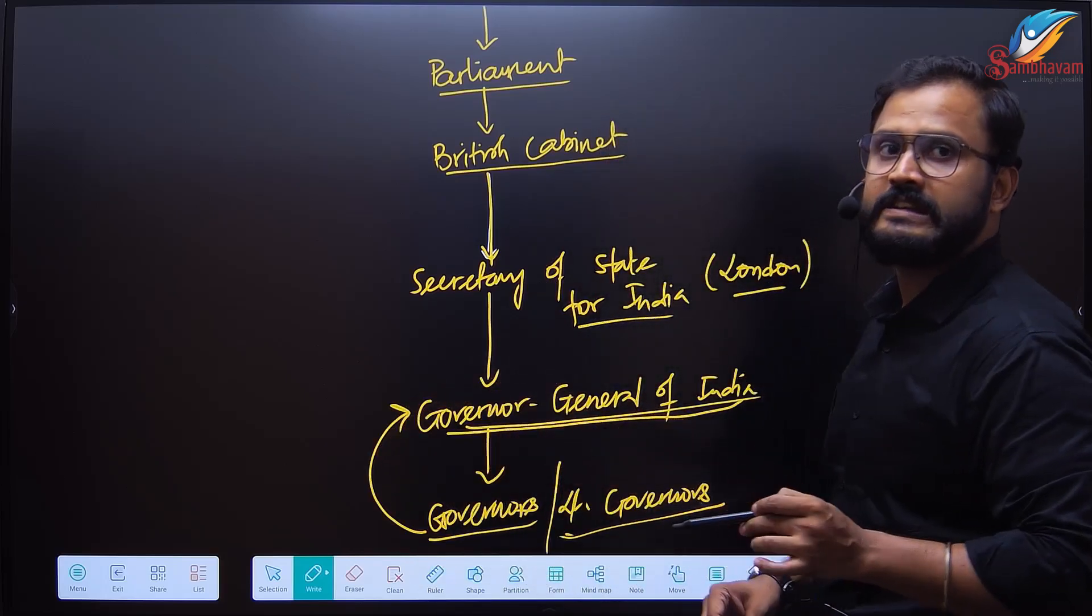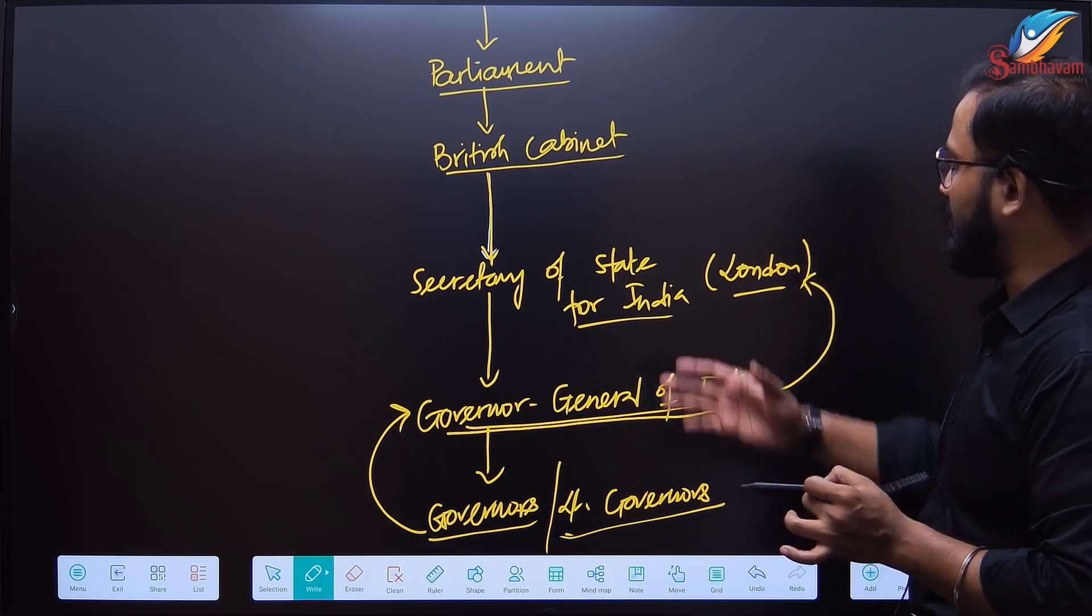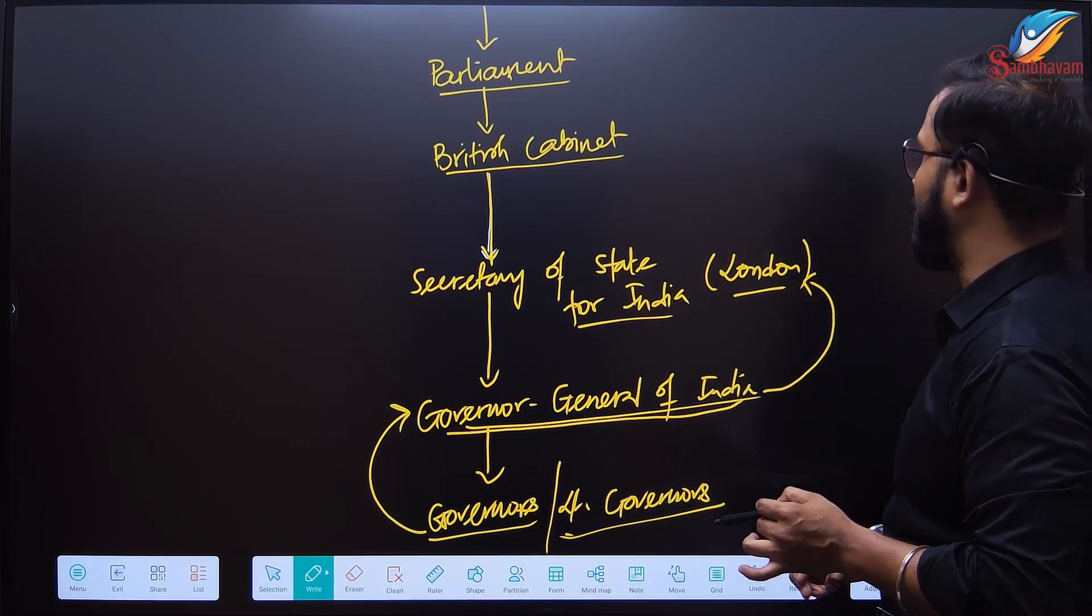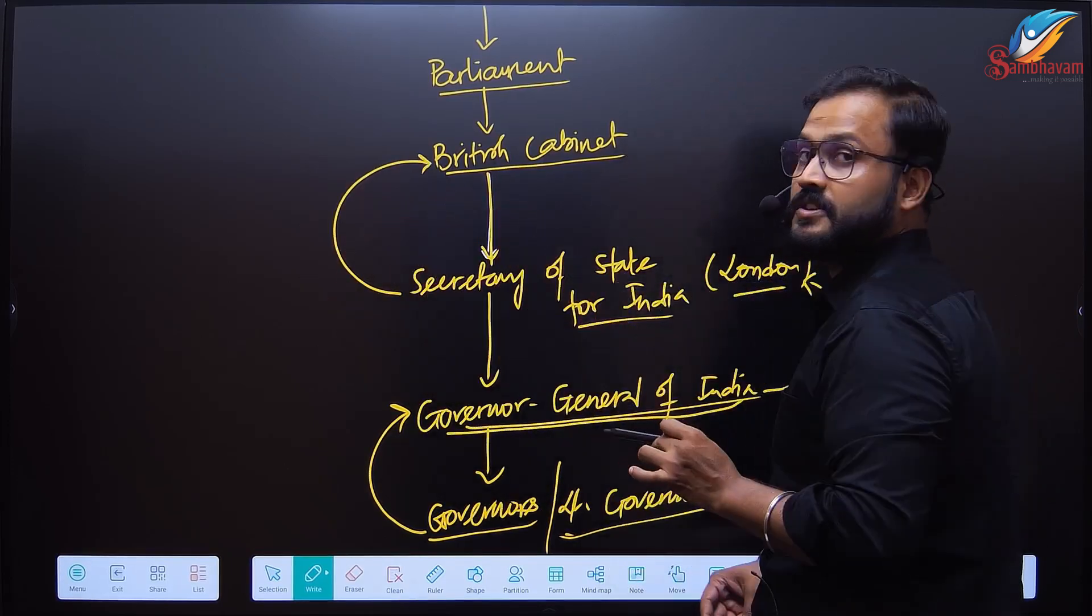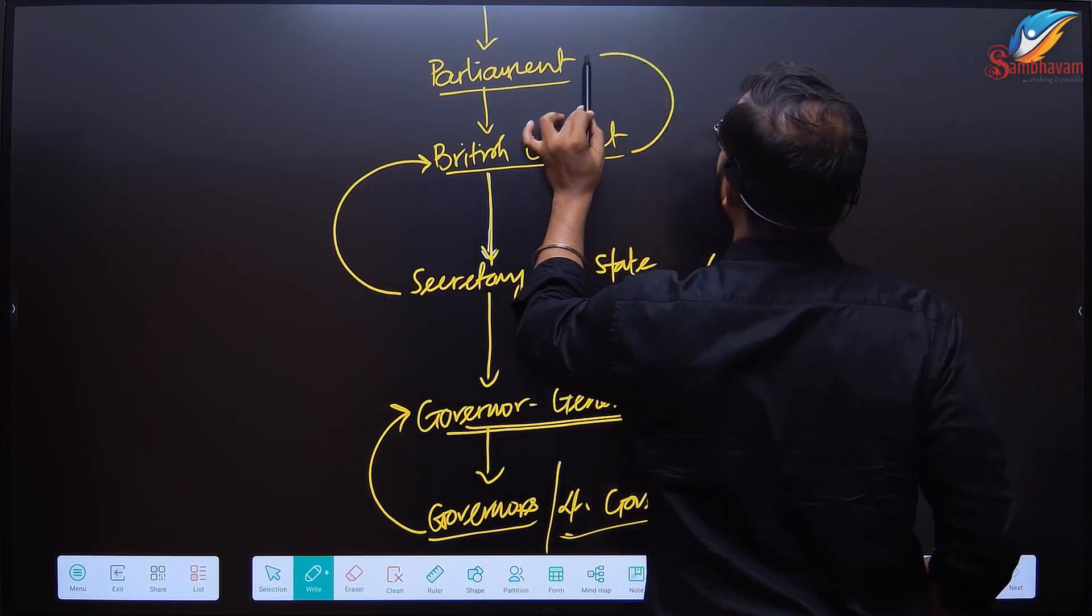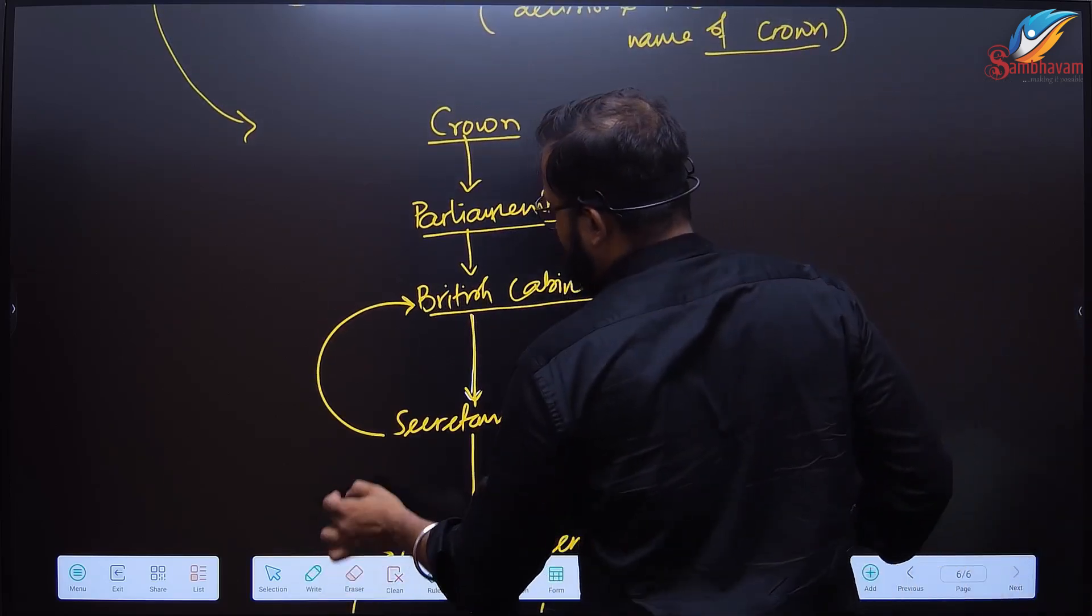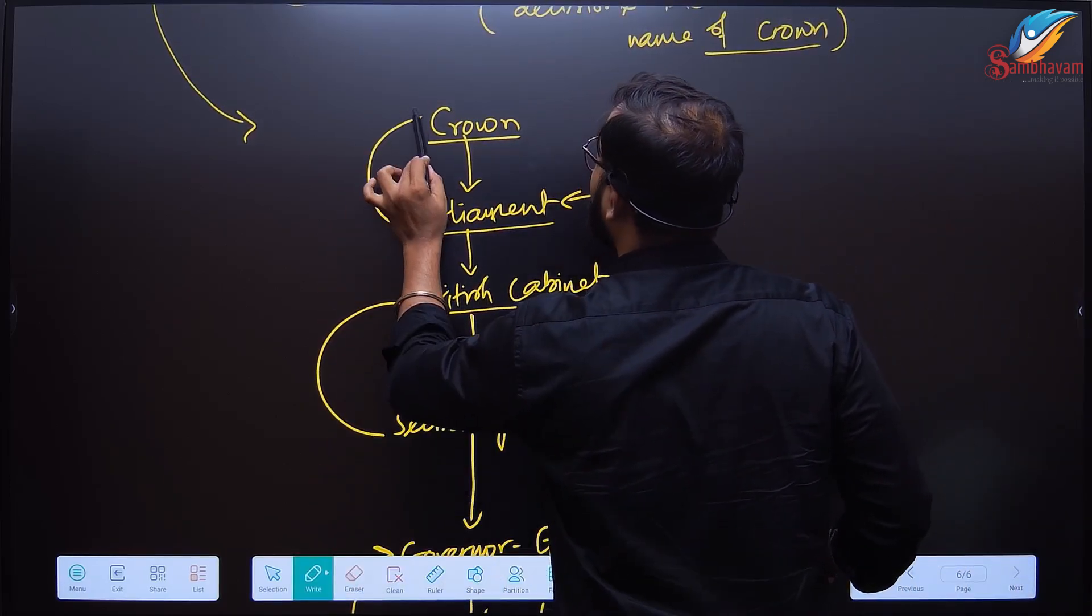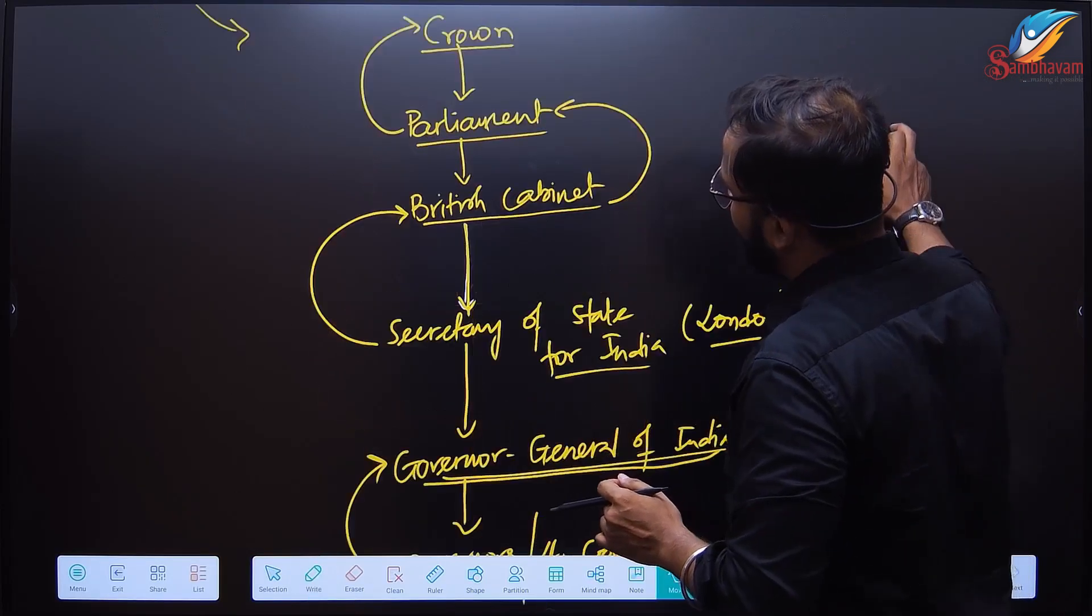Governors or lieutenant governors for each of the provinces. The governor is responsible to the Governor General of India. Governor General of India will be enforcing the directives of the Secretary of State for India housed in London. Secretary of State for India is a member of British Cabinet. British Cabinet is responsible to Parliament, and Parliament takes decisions in the name of the Crown.